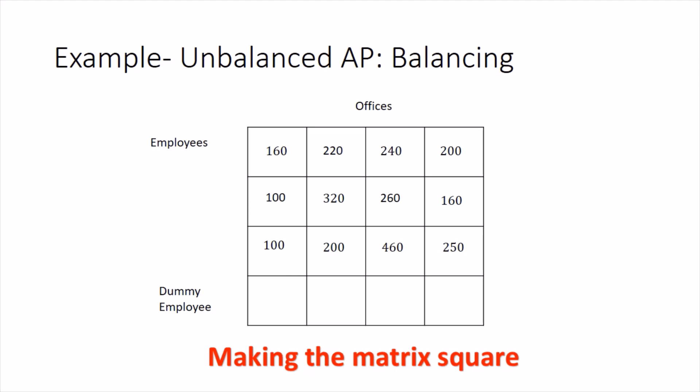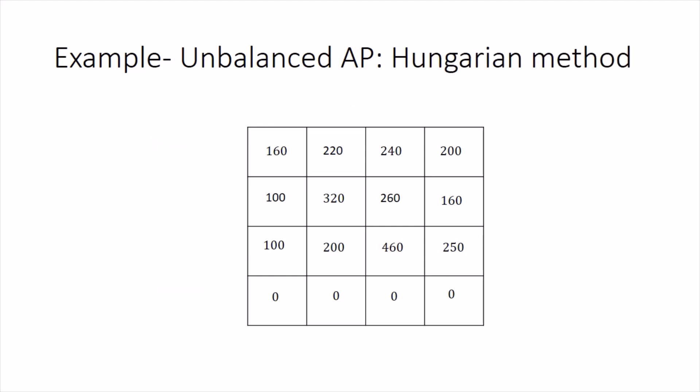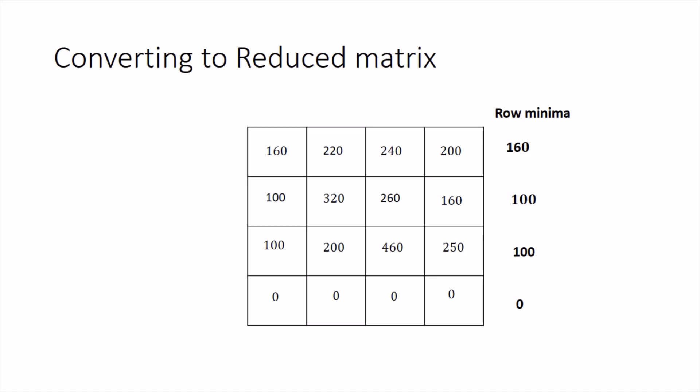To make it balanced and convert it to a square matrix, we insert a new row representing a dummy employee. Since the dummy employee does not exist in reality and is not doing any actual job, the cost of doing any job is zero. So always remember: in any newly inserted dummy row or column, put zero values. Now the problem is balanced and we can apply the Hungarian method.